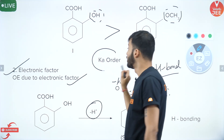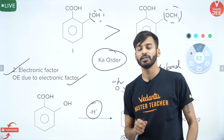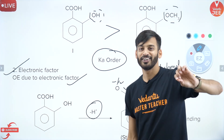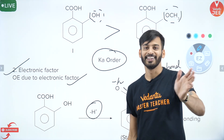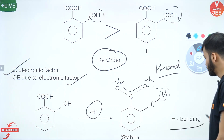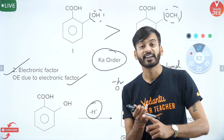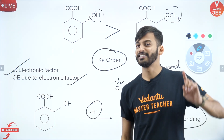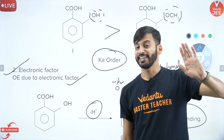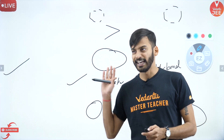Some of you might wonder about Ka order — Ka order and acidic strength are the same thing, so never get confused. Hydrogen bonding stabilized the anion — that is the electronic factor. In electronic factors we can also have inductive effect and mesomeric effects. We will see more in the next session where we will do questions. Ortho effect is now clear, and in the next session we will see how it is applied.